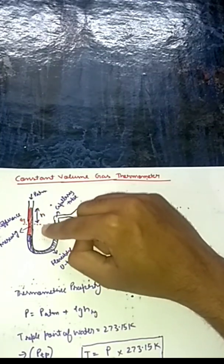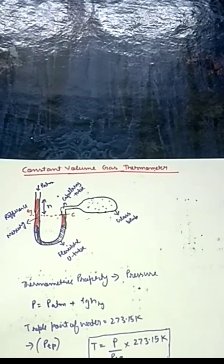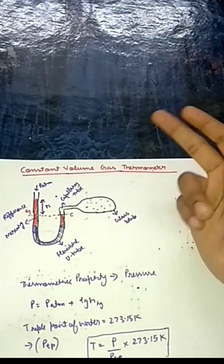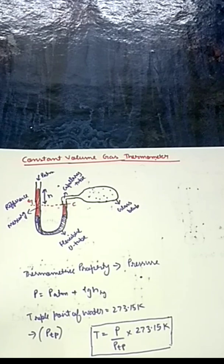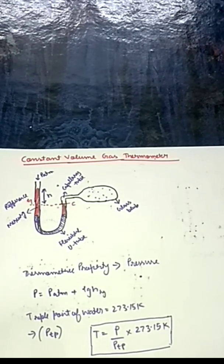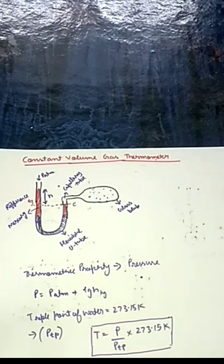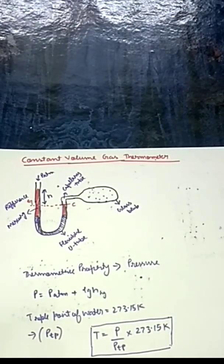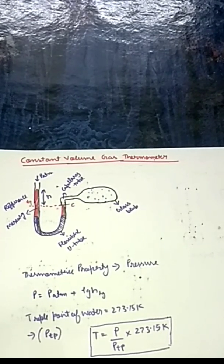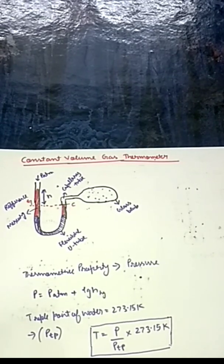We keep mark C as the reference and find out the height. The difference in height happens only when there is a change in pressure, so the thermometric property here is pressure. For comparison, the thermometric property of a thermocouple is voltage — a change in voltage means a change in temperature. Feel free to watch my thermocouple video for more on that.